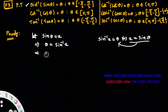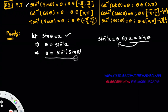That implies theta is equals to sin inverse of — and what is x? X is sin theta. So in place of x, you write sin theta. Now you see what we got: we got that sin inverse of sin theta equals to theta. What we wanted to prove, we got it. Therefore, sin inverse of sin theta equal to theta.